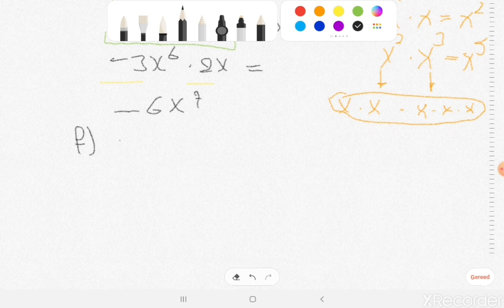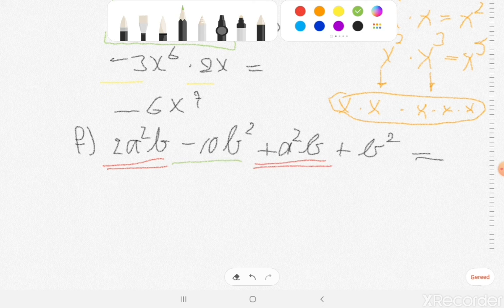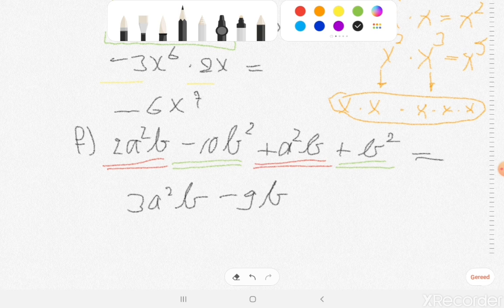Then the last one, exercise F. 2a squared b minus 10b squared plus a squared b plus b squared. Now what were the equal terms? The 2a squared b is equal with a squared b, and the minus 10b squared is equal with the plus b squared. So what is the answer? If we just look at the red lines, 2a squared b plus a squared b is 3a squared b, and minus 10b squared plus b squared is minus 9b squared.